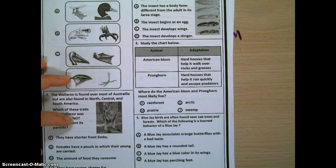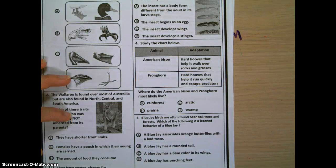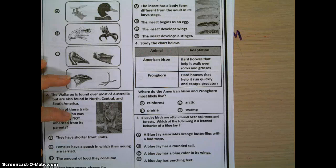Five, blue jay birds are often found near oak trees and forests. Which of the following is a learned behavior of a blue jay?